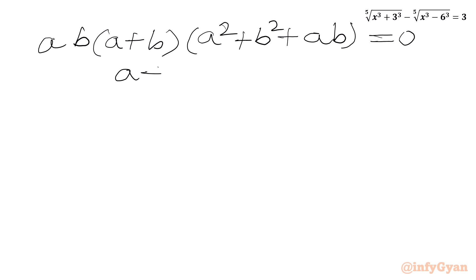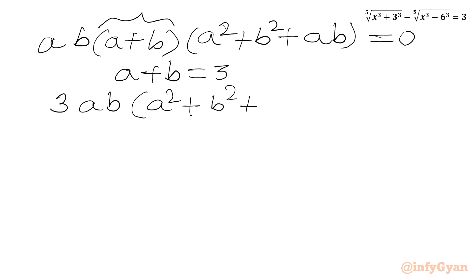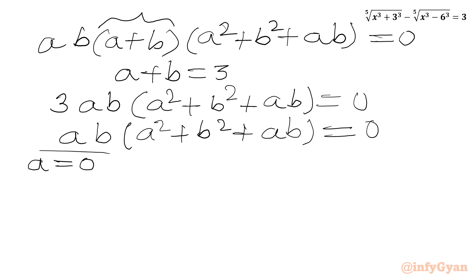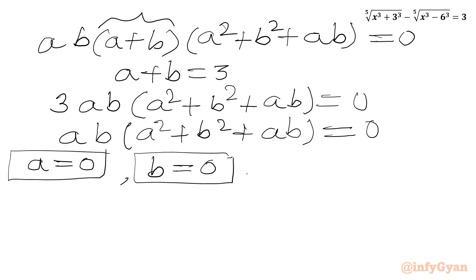But from equation 1, a + b = 3. So substituting: ab · 3 · (a² + ab + b²) = 0, which gives 3ab(a² + ab + b²) = 0. From here we can conclude either a = 0, or b = 0, or a² + b² + ab = 0.